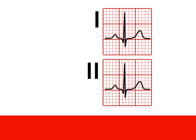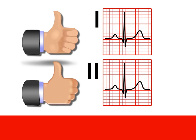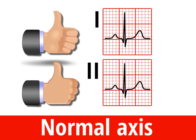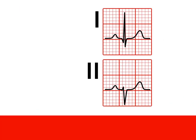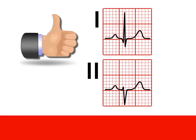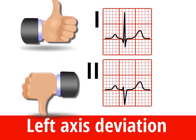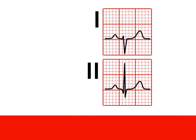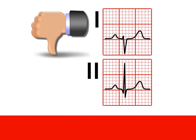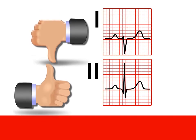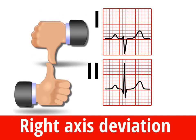If leads 1 and 2 are both positive, that's two thumbs up and the axis is normal. If lead 1 is positive but lead 2 is negative, your thumbs have left each other and that's left axis deviation. If lead 1 is negative and lead 2 is positive, your thumbs are heading right for each other and that's right axis deviation.